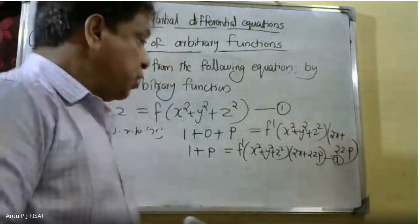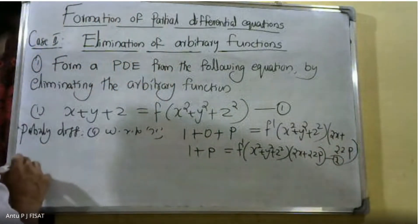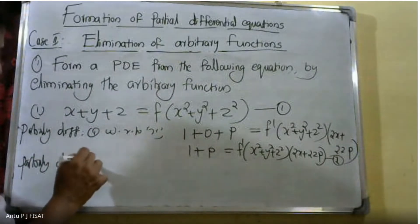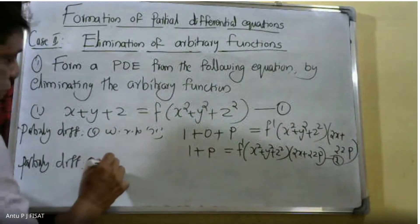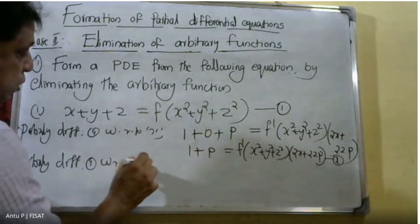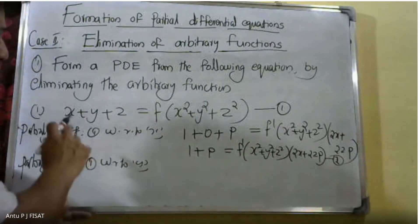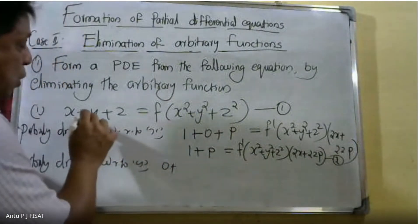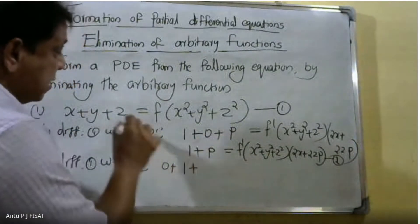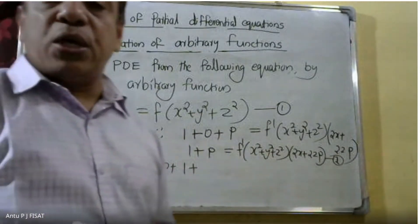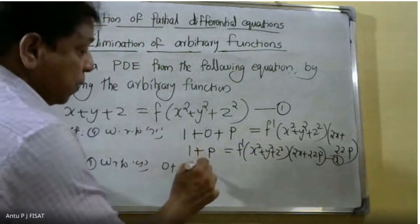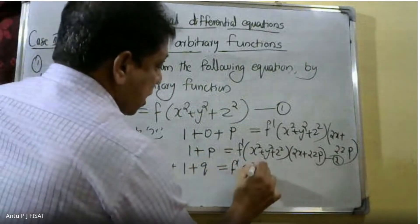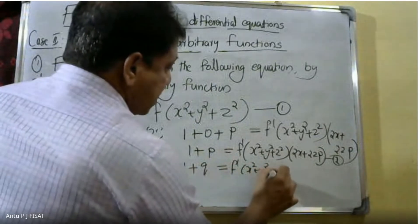Now partially differentiating equation one with respect to Y. Differentiating X gives zero, differentiating Y gives one, and Z being a dependent variable gives dz/dy which is denoted as Q. So one plus Q is equal to F dash X square plus Y square plus Z square.